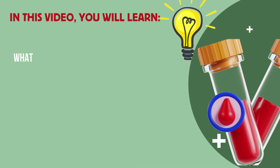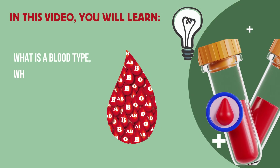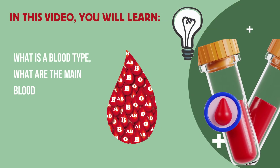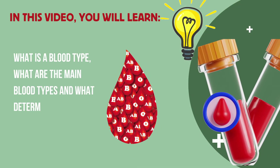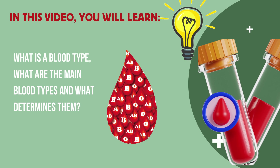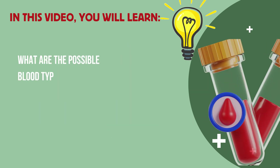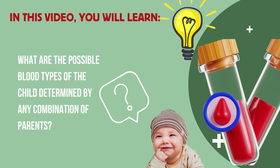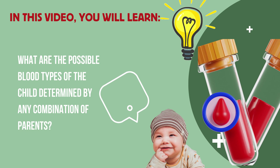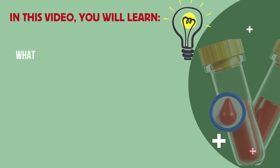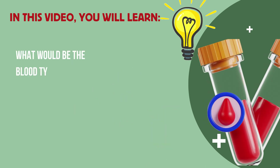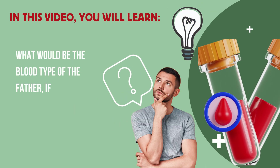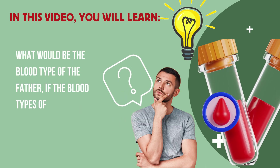In this video, you will learn what is a blood type, what are the main blood types, and what determines them. What are the possible blood types of the child determined by any combination of parents? What would be the blood type of the father if the blood types of the mother and the child are known?